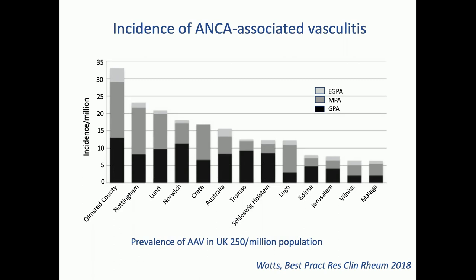Once we defined it, we could work out the incidence. In the UK — here in Nottingham and Norwich — it's about 20 cases per million per year. So it's rare, but not ultra-rare. In comparison, Goodpasture's is one to two cases per million per year. The prevalence in the UK is about 250 patients per million population. In the context of our vasculitis clinic, that certainly seems a lot — we seem to be seeing most of those.